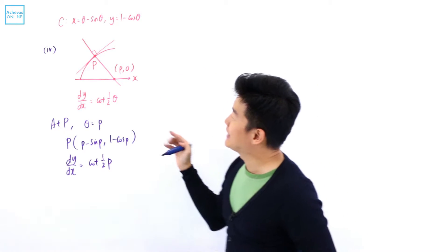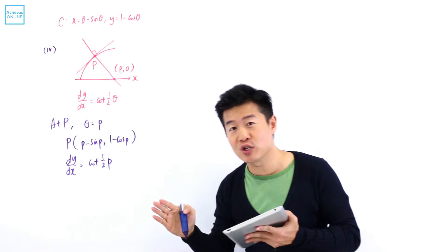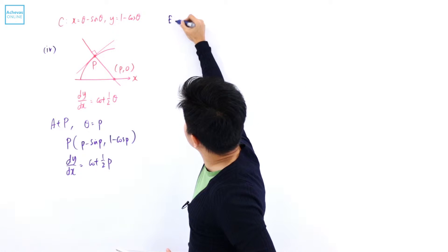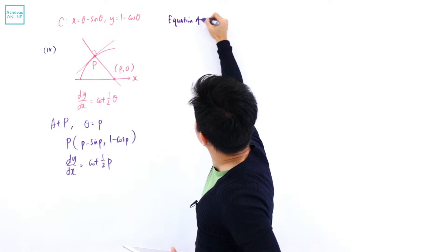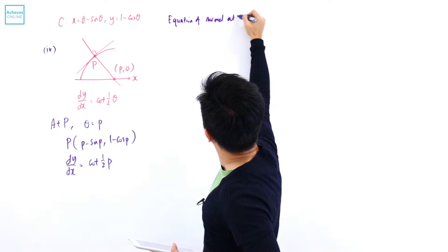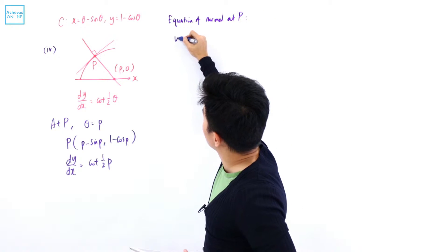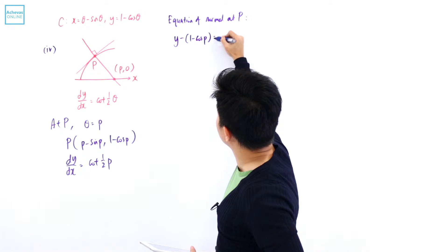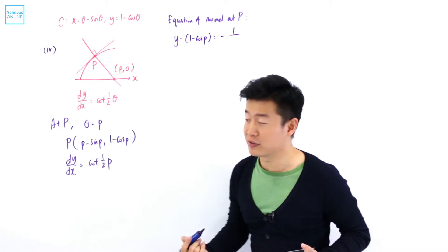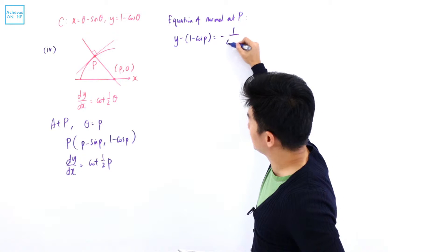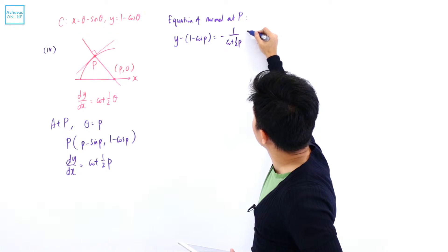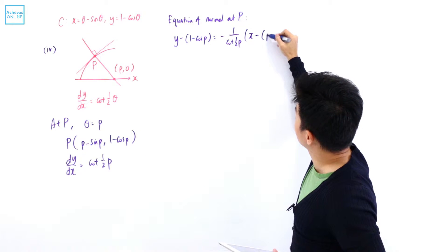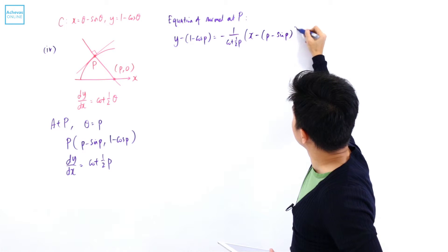Now we want to find the equation of the normal, because from that equation we can deduce that the x-intercept is at P₀. The equation of the normal at point P is: y minus (1 minus cosine P) equals minus 1 over the gradient of the tangent. The gradient of the tangent is cotangent of half P, so this becomes minus cotangent of half P, multiplied by x minus (P minus sine P).